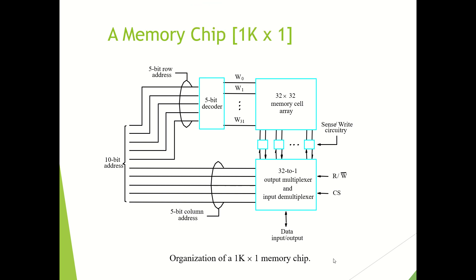I am going to explain about a 1K by 1 memory chip. 1K by 1 means 1K rows will be there. Using 1K you can calculate how many address lines you require, and 1 means you are getting only 1 output — the value of a single cell. 1K is equal to 2 to the power 10, so 10 address lines are needed. We are arranging the 1K of memory as a 32 by 32 memory cell array.